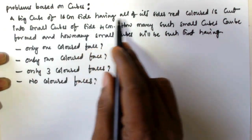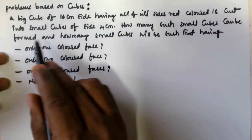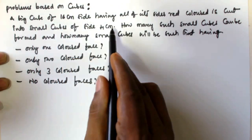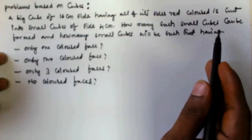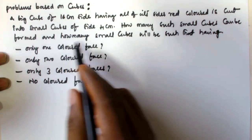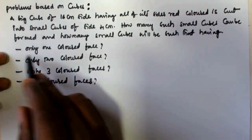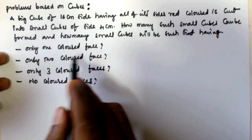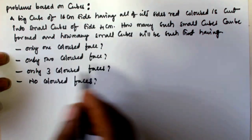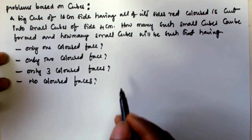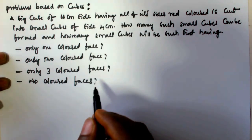So a big cube of 16 centimeter side having all of its sides red colored is cut into small cubes of side 4 centimeter. How many such small cubes can be formed and how many will have only one, two, three colored faces and no colored faces?